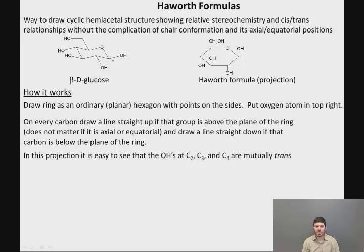So in this projection, it's easy to see that the OHs at carbon two, carbon three, and carbon four are mutually trans to each other. Looking back at the chair conformation, at carbon two, the OH is equatorial, but it's equatorial down. It's down and out. And then at carbon three, the equatorial position is up, and at carbon four, the equatorial position is down and out again.